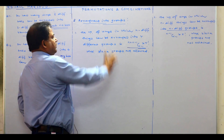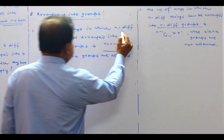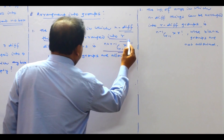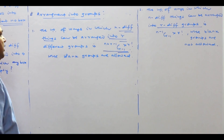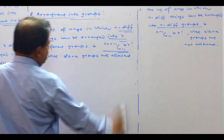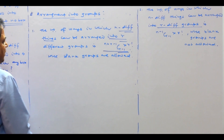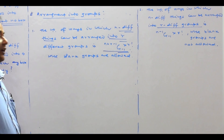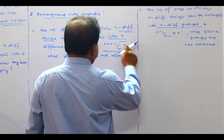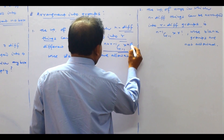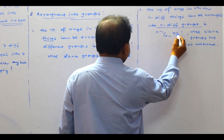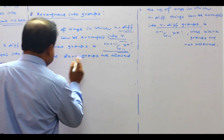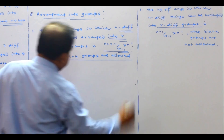The number of ways in which N different things can be arranged into R different groups is (N+R−1)C(R−1) into N factorial. This formula applies where blank groups are allowed.